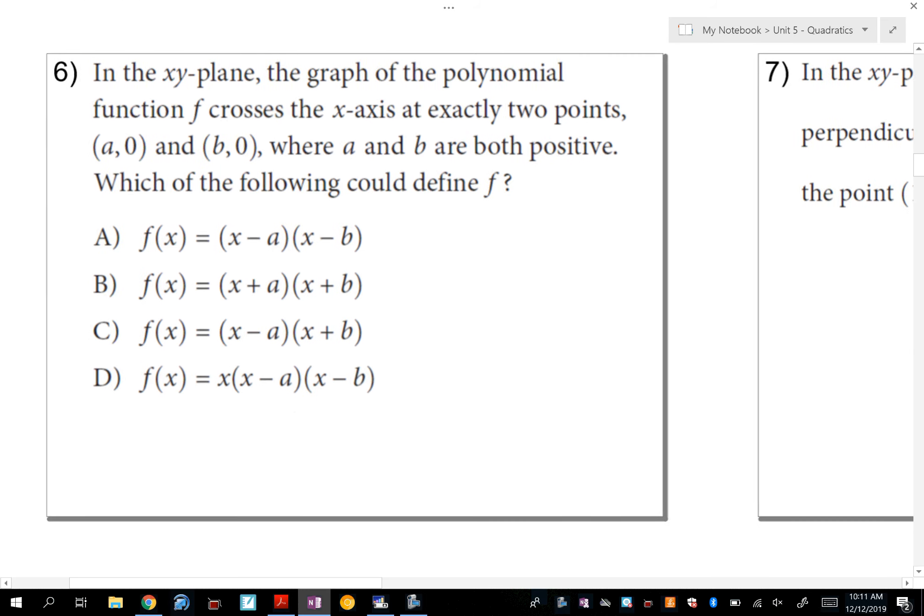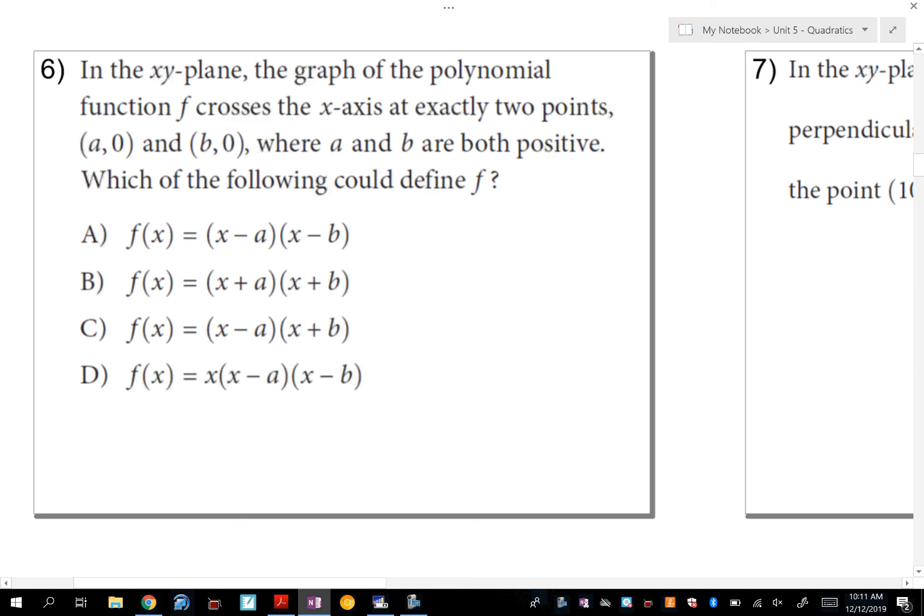The first one says, in the xy plane, the graph of the polynomial function f crosses the x-axis at exactly two points. So the moment I read that it crosses the x-axis at exactly two points, I know that I'm going to have to have two x-intercepts, and it says these x-intercepts are a, 0, and b, 0, where a and b are both positive numbers.